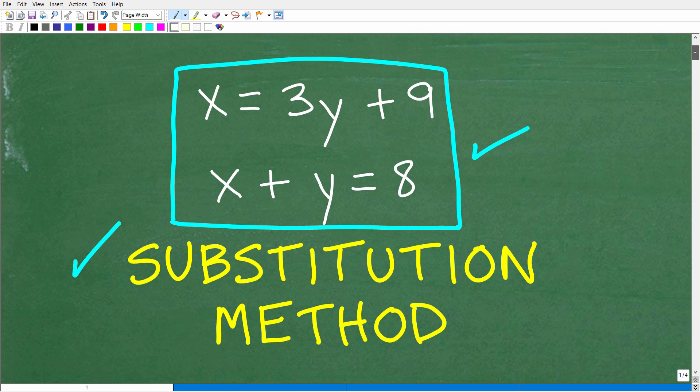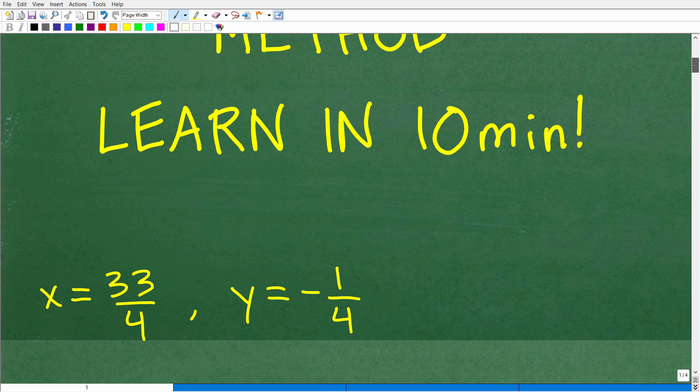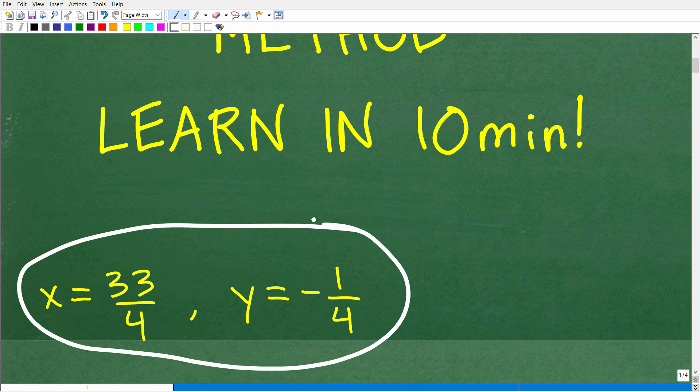Okay, so here is our problem. And we have two variables here, x and y. We are trying to find the value of each of these, i.e. the solution. And let's go ahead and take a look at the answer. The correct answer for this particular problem is x is equal to 33 over 4, and y is equal to negative one-fourth.